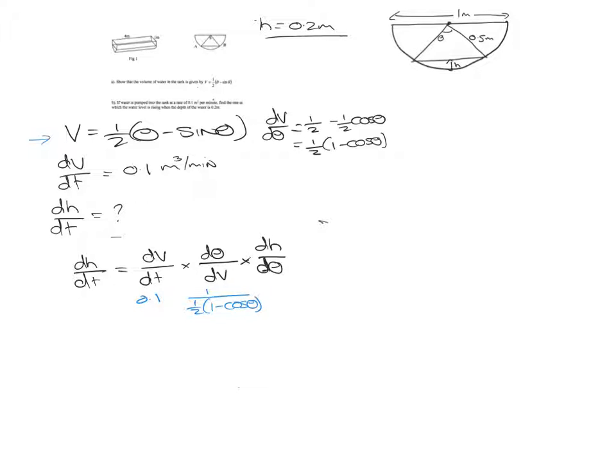Now we need to come up with an expression for H in terms of theta. Because this is a semicircle and the diameter is 1 meter, we know the radius is a half a meter. So the total distance down here is a half. We want to find H, so if we can find this distance here by bisecting the circle, which means this angle is theta over 2, if we can find this distance here, which we'll call X, then 0.5 minus X is going to give us H.